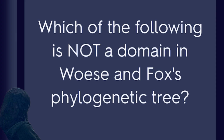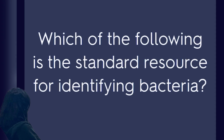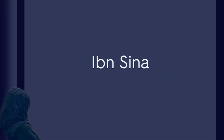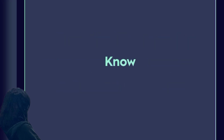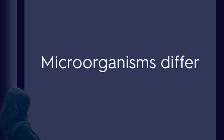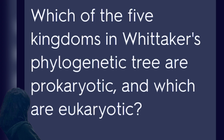Which of the following is not a domain in Woese and Fox's phylogenetic tree? Linnaean taxonomy. Which of the following is the standard resource for identifying bacteria? Eukaryotic. Thucydides. Microbiology specialization. Eukarya. Yersinia pestis. What did Thucydides learn by observing the Athenian plague? Serological tests. What evidence would you use to support the statement that ancient people thought disease was transmitted by things they could not see? Microorganisms differ. Mycology.